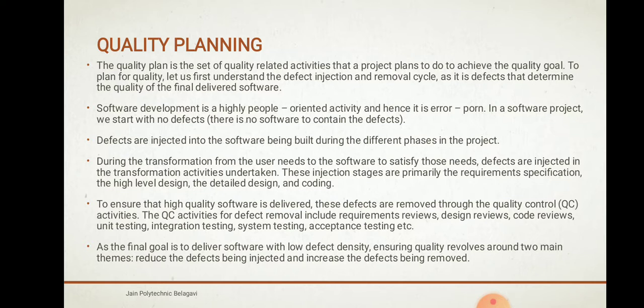To plan for quality, let us first understand the defect injection and removal cycle. Defects determine the quality of the final delivered software. Software development is a highly people-oriented activity, hence it is error-prone. In a software project, we start with no defects — there is no software yet to contain defects. Defects are injected into the software being built during the different phases of the project.